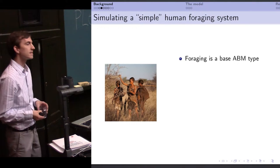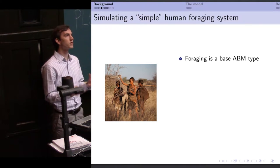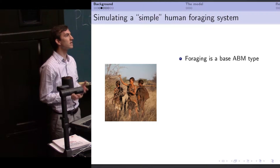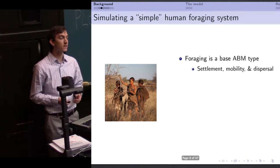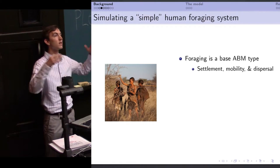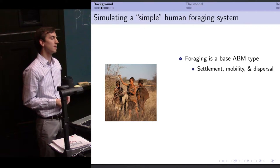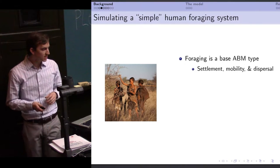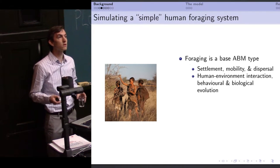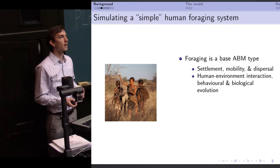Before I get to what my model actually is, I just wanted to quickly emphasize that this foraging model, this sort of simple human foraging system has turned into an underlying base agent-based modeling type in archaeology because it's relevant for so many different research questions. It's relevant for settlement patterning, modeling mobility, modeling dispersal at the regional and global scale as well, because of course why do you move? You move for resources. I argued that ad nauseam in my PhD dissertation and I will skip over that here. It's also of course relevant for understanding behavioral and biological evolution because this is our interface with the environment. We exploit the environment, we are constrained by the environment.